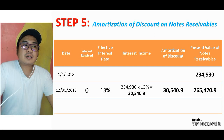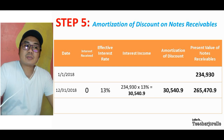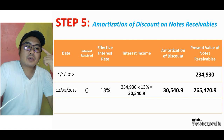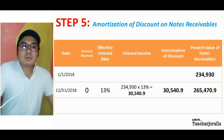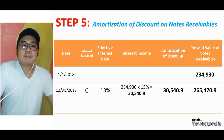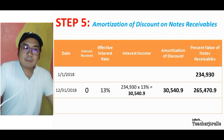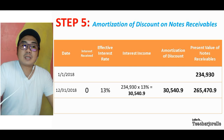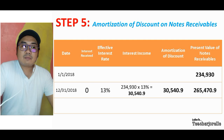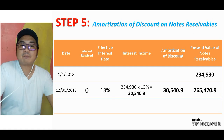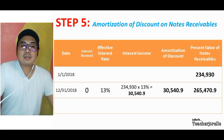The effective rate is 13 percent. To solve for the interest income, take the present value of the note receivable from January 1, which is 234,930, and multiply it by 13 percent. The result is 30,540.9 — that is also your amortization of discount. Add it to the January 1 present value of 234,930 and the result is 265,470.9.